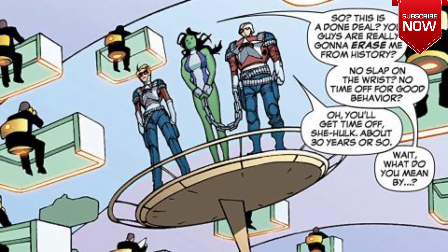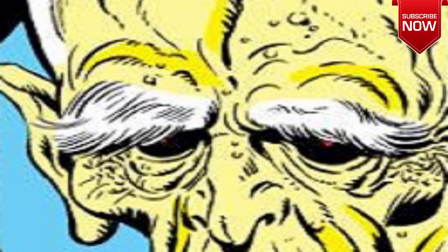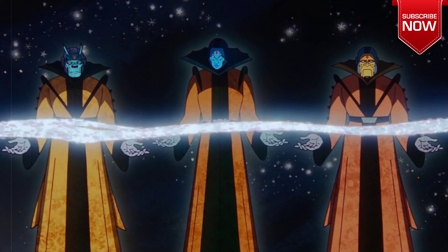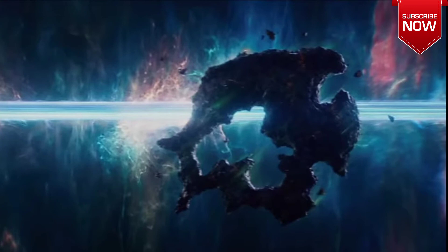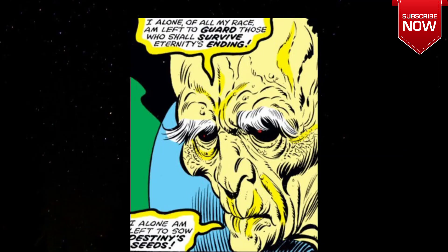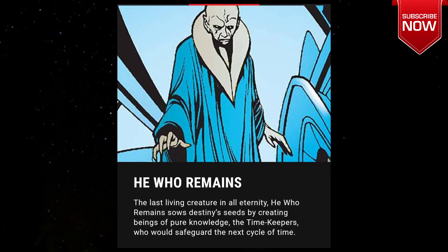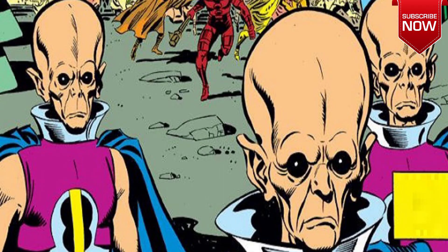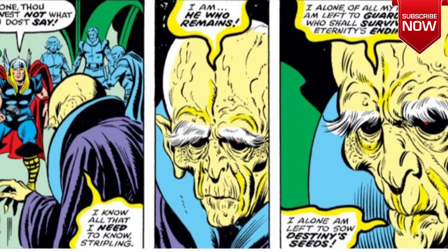The comic book will show the origin of the TVA — He Who Remains. The time keepers were made. In this time, the reality is a piece of rock or castle. But He Who Remains' motive is to protect the timeline. Maybe you can see the negative version of He Who Remains. The second possibility is the time twister, whose motive is to destroy the alternate timeline.